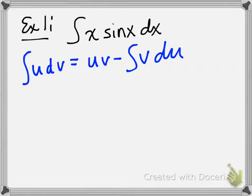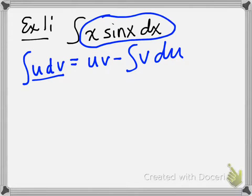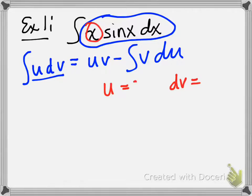So if I'm trying to find the integral of u dv, I have to look at this part and decide what in this problem is going to be u and what is going to be dv. I need some part of it to be u and some part to be dv. I'm going to let x be u, and I'm going to let sin(x) dx be dv.